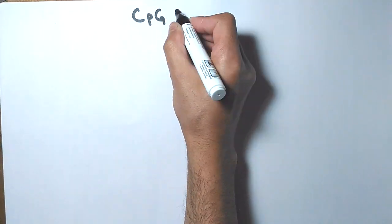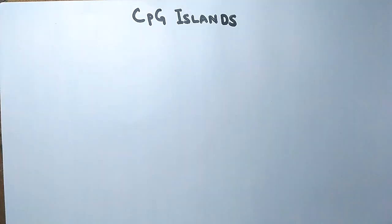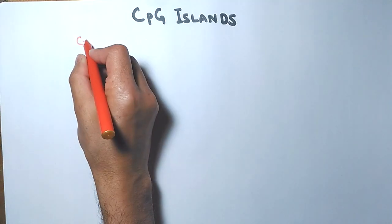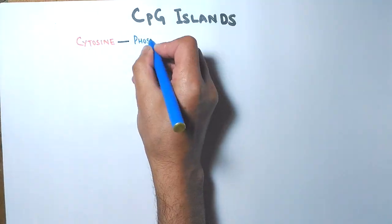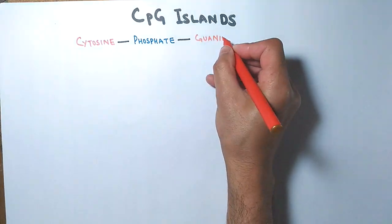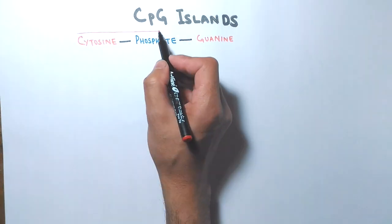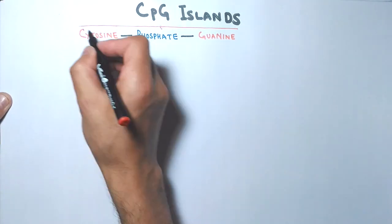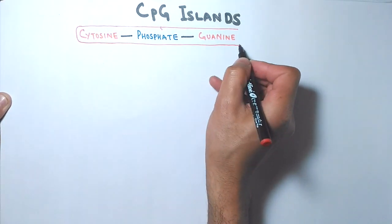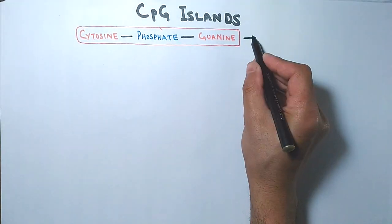In this video on molecular biology we will be discussing CpG islands. CpG refers to cytosine, phosphate, and guanine — these are dinucleotides connected in series by phosphates.